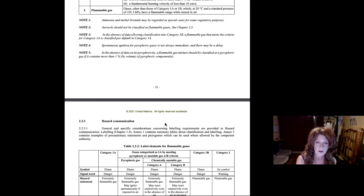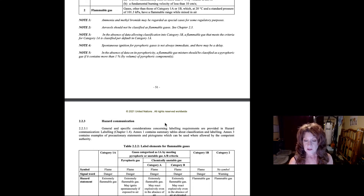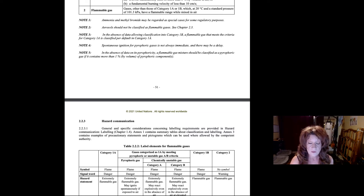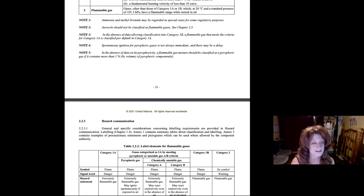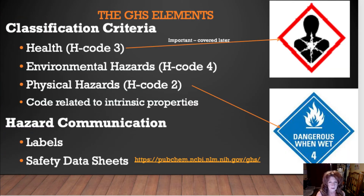This category system for physical hazards, health hazards, and environmental hazards is one unified system so everyone uses the same descriptors. We want to make sure we say 'flammable gas' and not 'combustible gas' — that way we're all using the same words, which reduces the chance of errors and injuries. There are three different classification criteria: hazard codes for physical hazards, hazard codes for environmental hazards, and hazard codes for health hazards, all found within the GHS documentation.